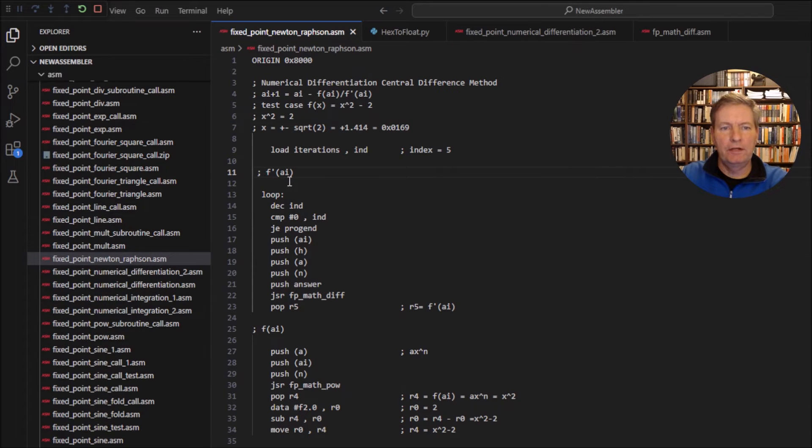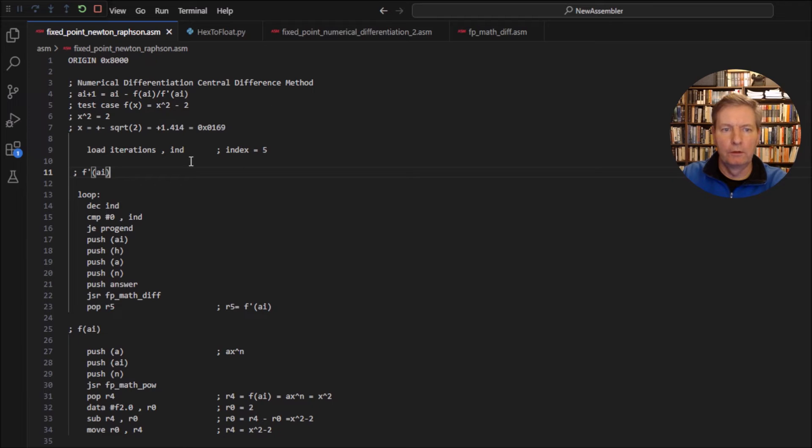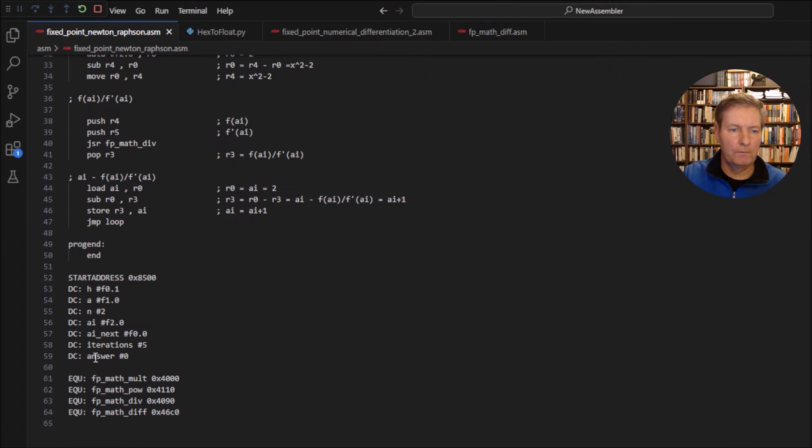Now I have generated the code here for our Newton-Raphson approximation using a simple polynomial. So our polynomial is x squared minus 2. So we expect to get the answer 1.414. So the answer is 1.414 and our fixed point is 0x0169. So again we can break it down into little sections. I've written the algorithm up here. So we've got to generate the f derivative of our value ai. Now our values are actually here at the bottom. So all of our constant terms are at the bottom here.